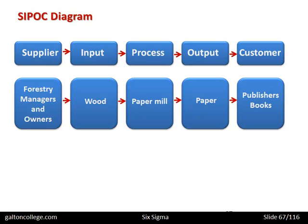For example: Forestry Managers and Owners could be the Suppliers, who supply Wood as the Input. That goes to a Process — a Paper Mill — and the Output is Paper. The Paper Mill produces Paper, which is then passed to the Customer, who may be publishers of books, newspapers, or magazines. We need to ensure that we're focusing on the process part to look for errors and possibilities of failure within the business, so that the process from supplier to customer is as smooth and efficient as possible.